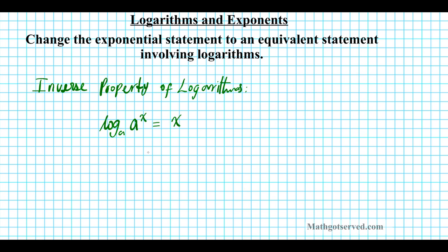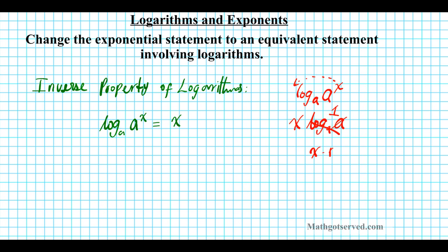So just to help you understand this property, it is a combination of two facts. First of all, logarithms and exponents are inverses, and then if you apply the power property, you end up with x. So if we have log base a of a to the x, if you apply the power property you bring down the exponent and you have x times log base a of a. Now log base a and a are inverses, so they cancel each other out to just one, and then you have x times one which is x.